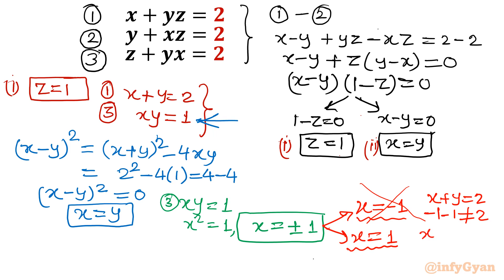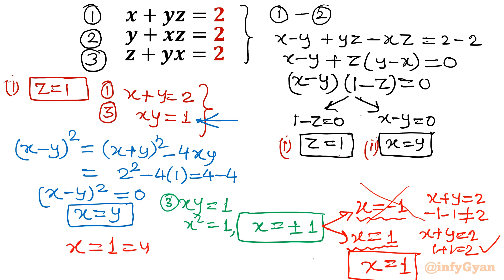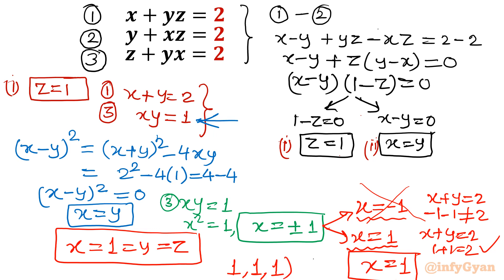Let us check: x plus y equal to 2, so 1 plus 1 equal to 2 — satisfying. And 1 times 1 equal to 1 — also satisfying. So x equal to 1, and since x equal to y, then y is also 1. We are solving under z equal to 1, so z is also 1. The first solution set is (x, y, z) equal to (1, 1, 1).